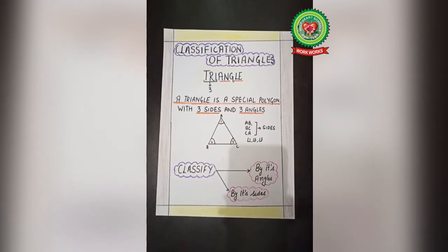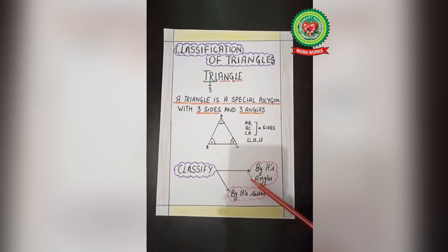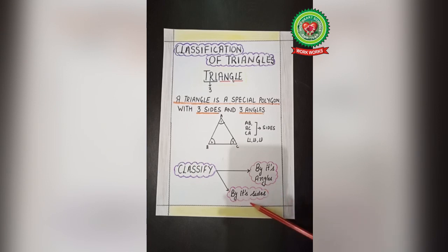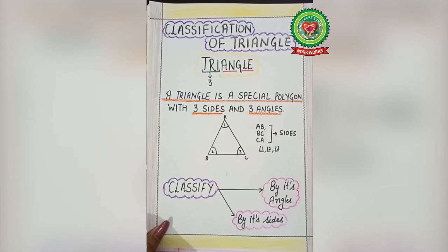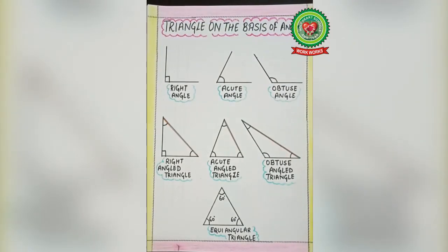Now let's move to the classification of triangles, which you have already covered in previous classes — in fifth and sixth standard. We will quickly recall the classification. We can classify triangles on the basis of two things: by its angles, and by its sides.